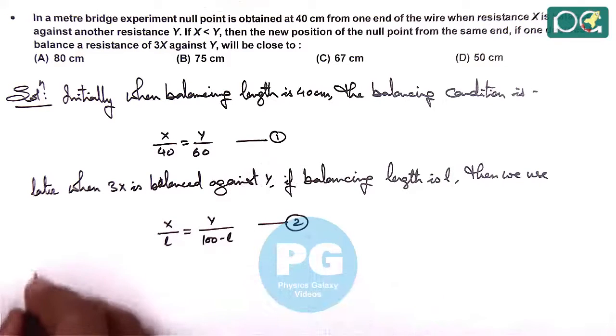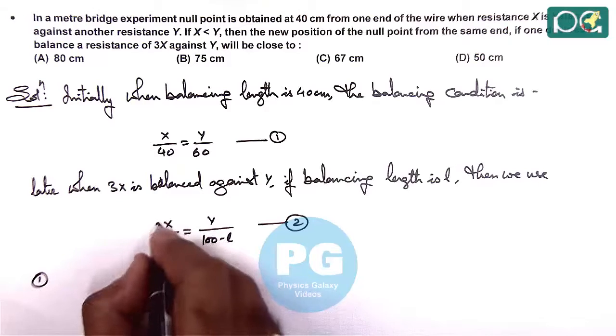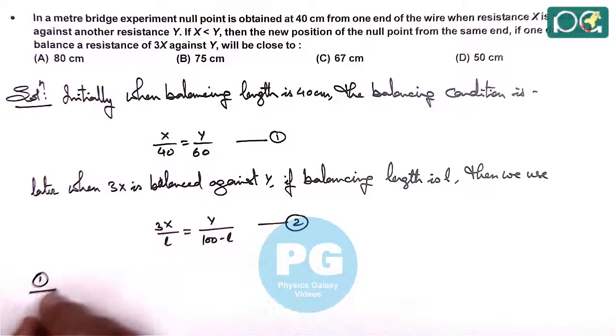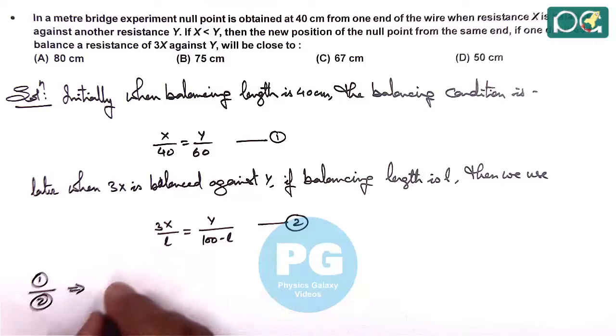So from equation one and two if we divide, this should be 3x, if we divide one by two this gives x by 40 upon 3x by l, this gives l by 120,